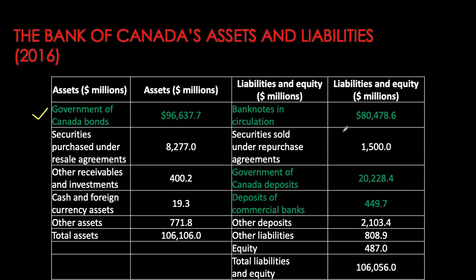All the dollar notes circulating in our economy are a liability for the Bank of Canada because it has deemed them legal tender. Every paper note issued by the Bank of Canada is backed by its guarantee that it should be acceptable as a means of payment, repayment of debt, or for paying taxes. The Bank of Canada also holds Government of Canada deposits, and commercial banks hold deposits at the central bank — referred to as settlement balances — which are a liability for the central bank. The central bank pays the deposit rate on these, and charges the bank rate on advances.